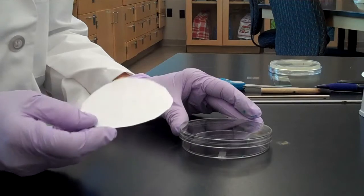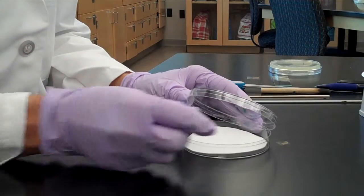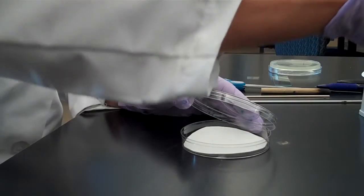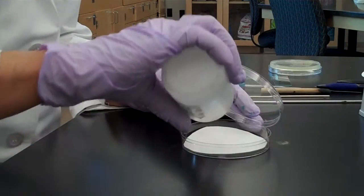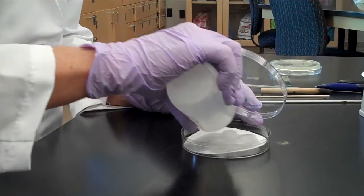Obtain a piece of filter paper and trim it to fit into the petri dish. Add a few drops of deionized water and make sure that filter paper is fully saturated.